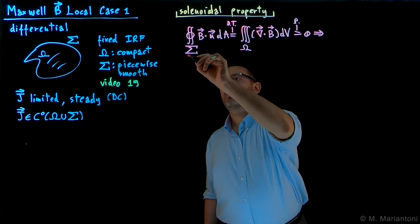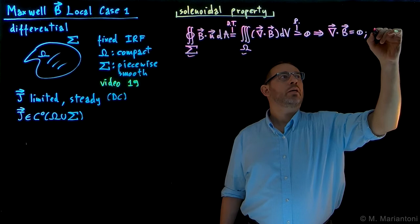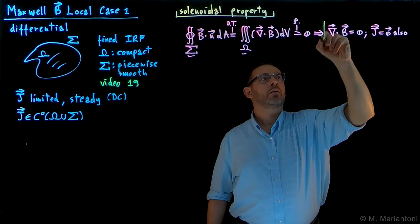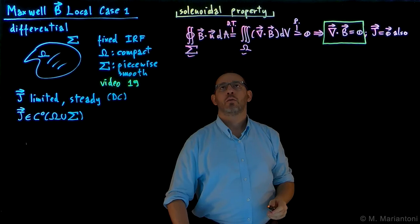Because of the arbitrariness of capital Sigma and capital Omega, it follows that divergence of B has to be equal to zero. And this is also true, for example, when J is equal to zero. So we have that the divergence of B is equal to zero. This is the differential form case one, local form case one, of the solenoidal property of B.